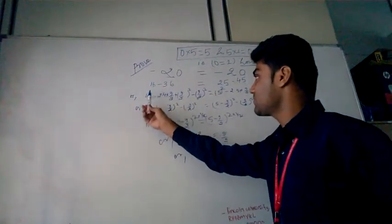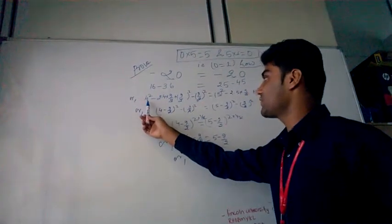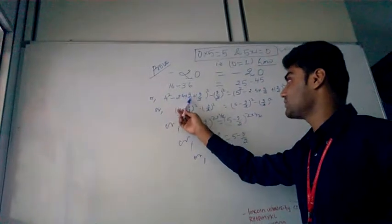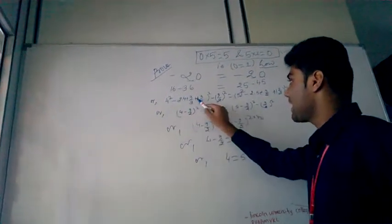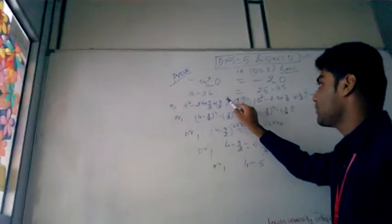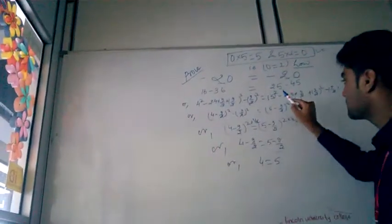Now, it comes to this. 16 equals to 4 square. Minus 36 equals to 9 into 4, 36. 2 to cancel. Now, we add plus 9 by 2 whole square, means we subtract here to balance the equation. Now, come to this part.